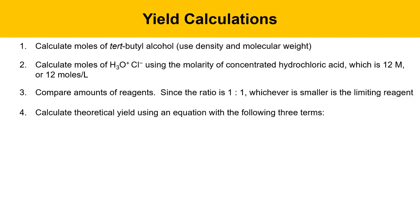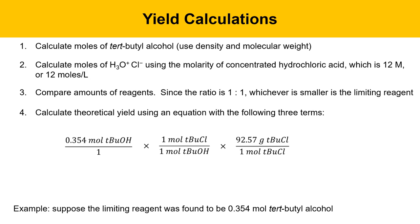Calculate the theoretical yield of the reaction using an equation with the following three terms. We're going to suppose that the limiting reagent was found to be 0.354 moles of tert-butyl alcohol. This is the equation that'll get set up, and if you use these numbers in your calculator, you'll get 32.8 grams of tert-butyl chloride as the theoretical yield.